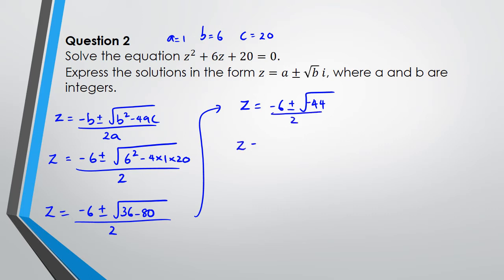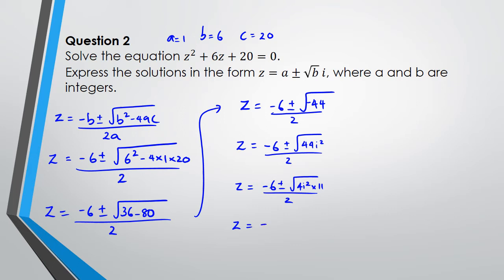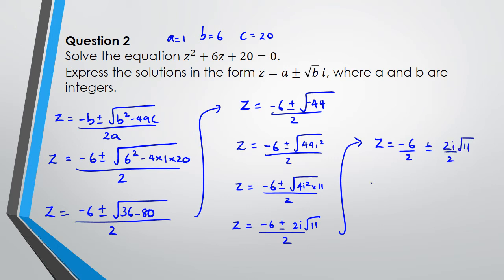Carrying on: z = (-6 ± √(-44)) / 2. We can write -44 as 44i². And 44 can be further simplified as 4i² × 11. When I square root the 4i² I get 2i, while √11 stays inside. The 2 cancels with the denominator, giving z = -3 ± i√11.